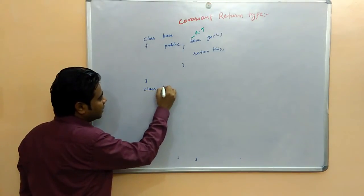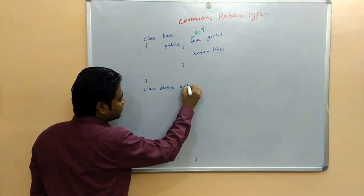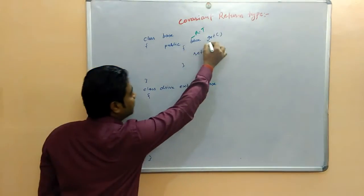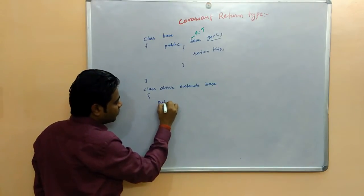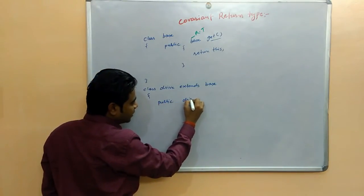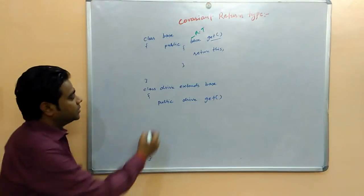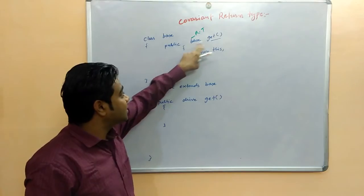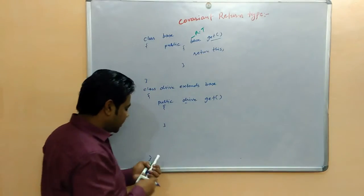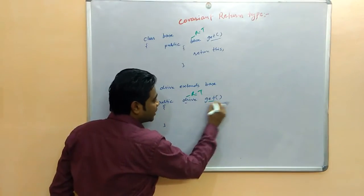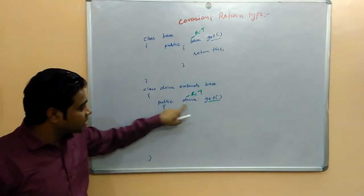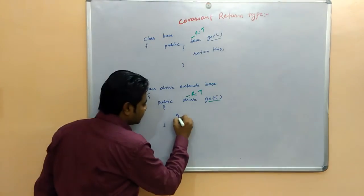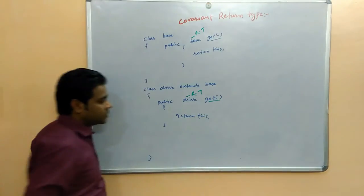Then in the same case, class Drive extends Base. Inside Drive class, we have to use the get method. Public Drive getMethod — the method name is get, clear. This method name is get; in the base class the return type of get method is base, but here in Drive class the return type of get method is Drive. Then return this.